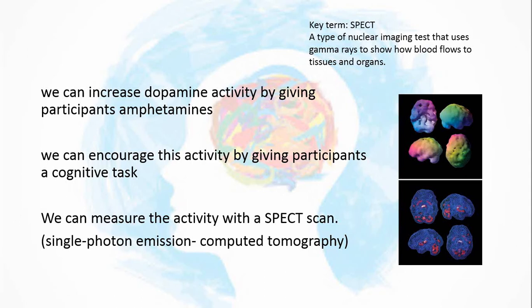How are we going to do that? We're going to increase the dopamine by giving patients amphetamines - a class of drug that increases dopamine levels in the brain. We're going to see if it helps with cognitive function by giving them tasks requiring cognitive processing, such as problem-solving skills. We're going to measure brain activity using a SPECT scan - single photon emission computer tomography - a nuclear imaging test that looks at blood flow around the brain. If there is lots of cognitive activity, we should see lots of activity in the prefrontal cortex, because that's the area of the brain that does the cognitive processing.